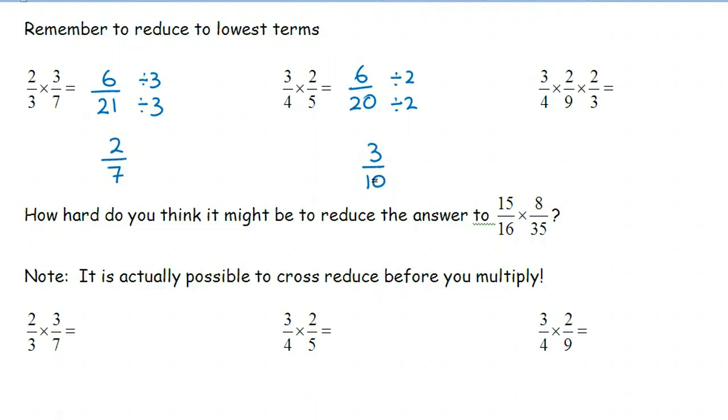If we have multiple fractions, we still multiply all the numerators together, and we still multiply all the denominators together. In this case, three times two times two makes twelve, and four times nine times three makes one hundred and eight.